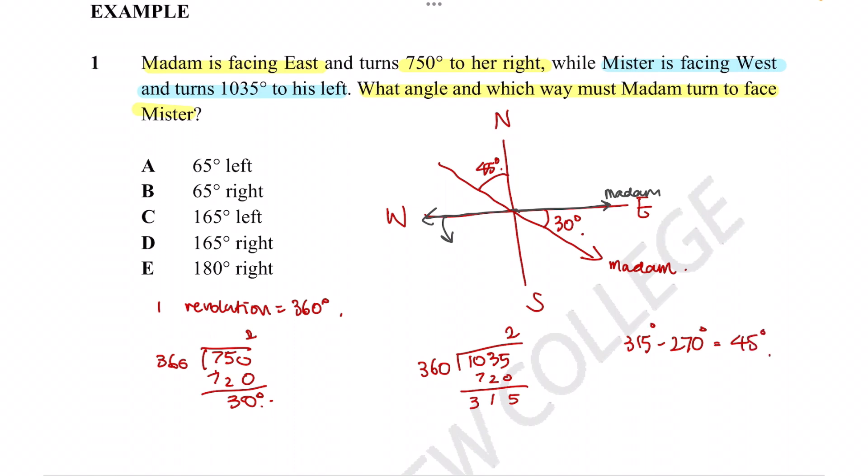Now we actually know in which directions these two characters are facing. The question wanted us to figure out which direction must Madam turn, this way or this way, to see which direction she will turn to face Mister. So if she turns in this direction to face Mister, she needs to turn a total of 30 degrees plus 90 degrees plus 45 degrees. So that's going to equal 165 degrees.